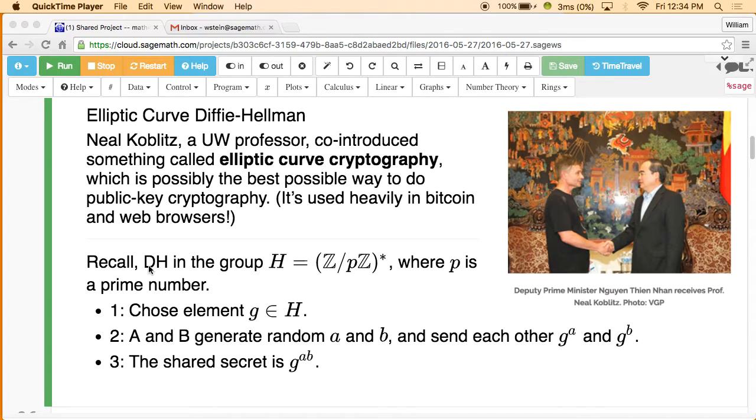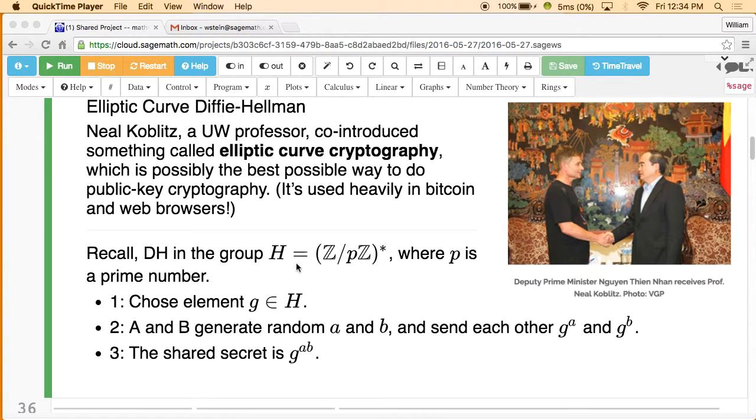That's the case, by the way, if and only if p is a prime number, well, or one. So if and only if either p is prime or one, will Z mod pZ star be a... actually, Z mod pZ star is always a group, but I don't want to get into that.